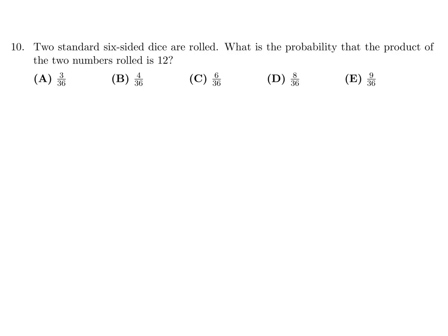Two standard six-sided dice are rolled. What is the probability that the product of the two numbers rolled is 12? Any probability question is usually a fraction. The bottom number is the total possibilities, and the top is the specific condition. So in our question, what is the total if you rolled two dice? Well, the first die, there's six possible numbers that could appear. On the second die, there's six possible numbers that could appear. So 6 times 6, there's 36 possible combinations of those two dice.